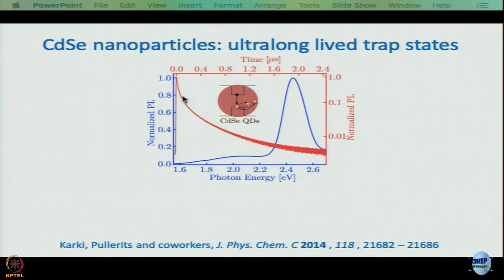One thing to remember is that in a multi-exponential decay, the contribution of each component to steady-state intensity is Aᵢτᵢ. The number of trap states is much less, so the total intensity from trap states is very small even though the lifetime is very large. Amplitudes for trap states are often 1–2%, and even 10% would be huge.